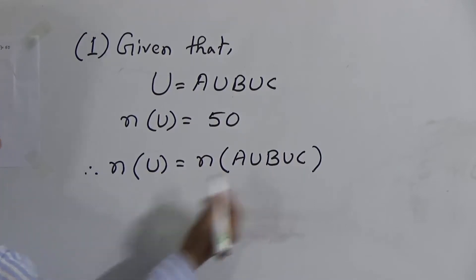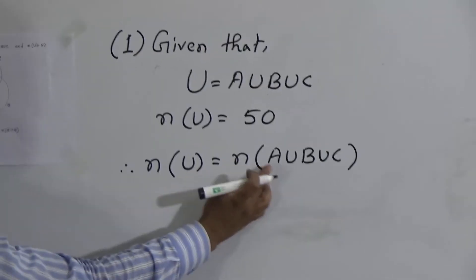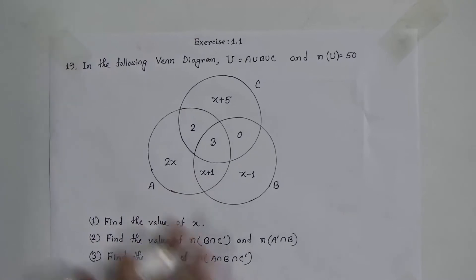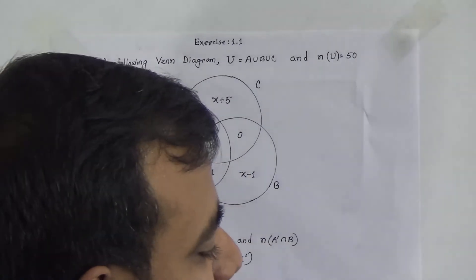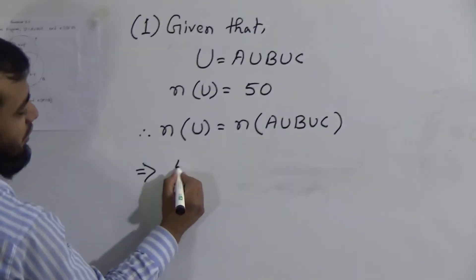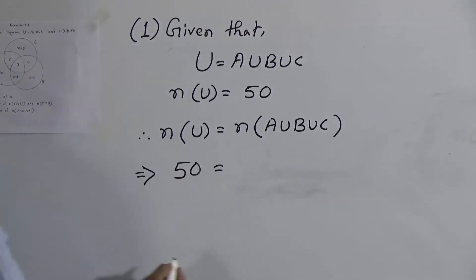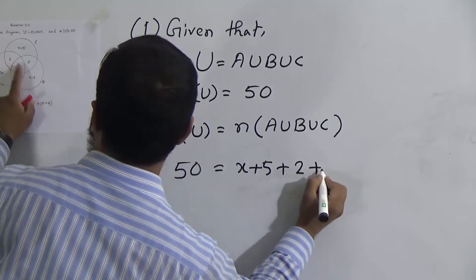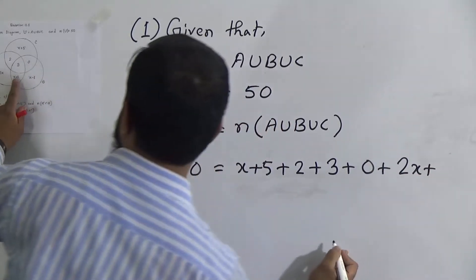From the diagram, n(A∪B∪C) equals the addition of all seven disjoint sets. Therefore: 50 equals the sum of the seven disjoint sets, which are: x + 5 + 2 + 3 + 0 + 2x + (x + 1) + (x − 1).